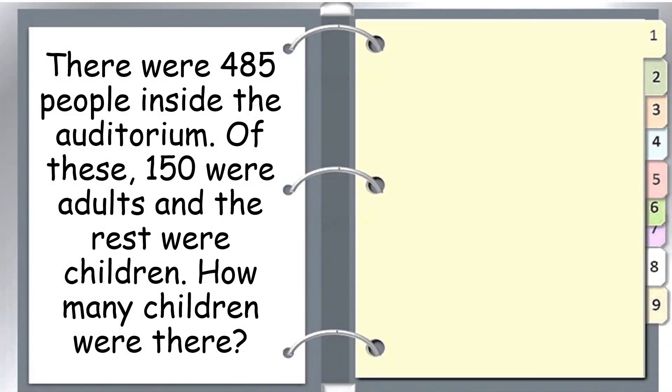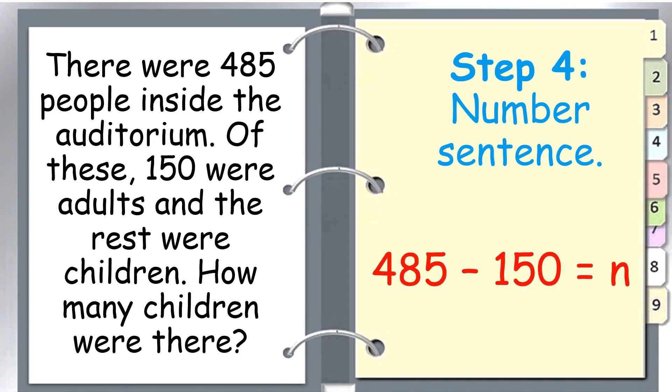We are ready to proceed to the next step, which is the number sentence. So we have 485 minus 150 is equal to n.